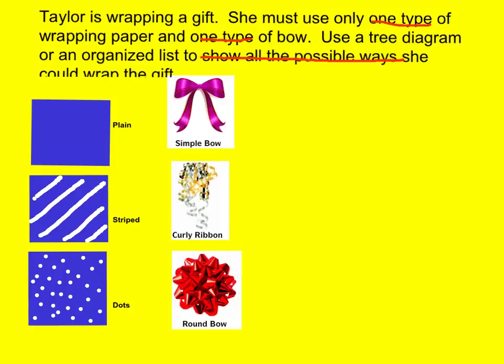So let's take a look here. She has three types of paper: plain, striped, and dotted. She has a simple bow, a curly ribbon, and a round bow.